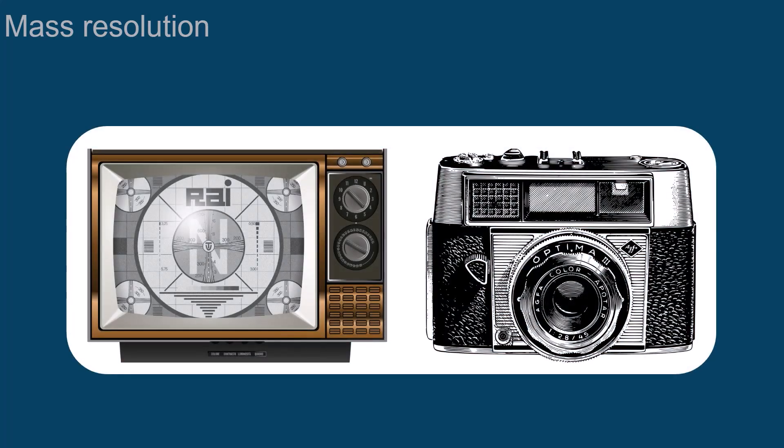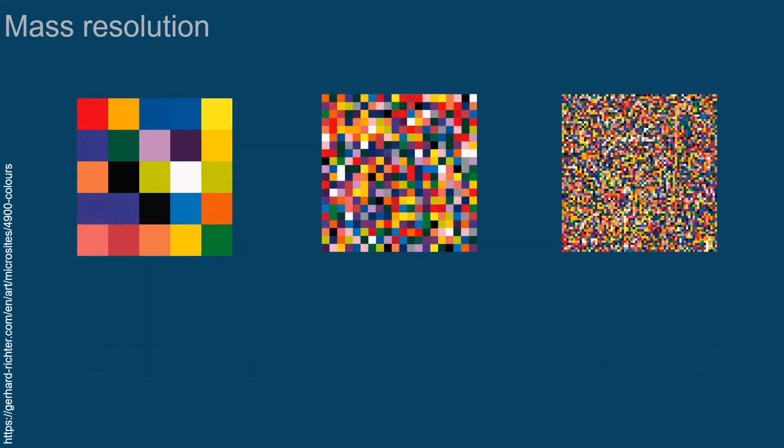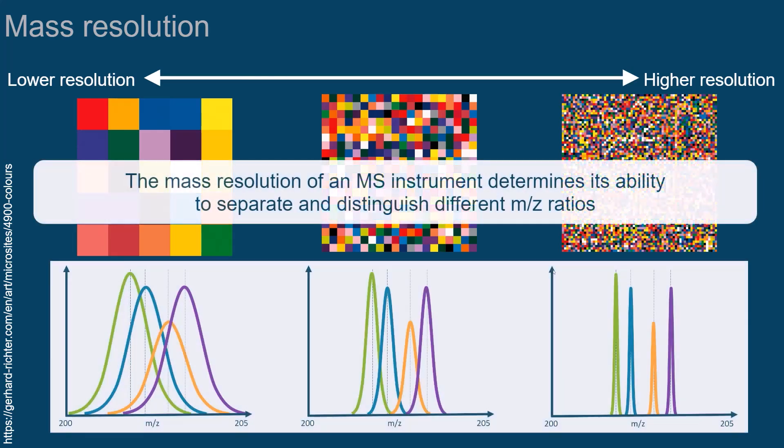You may be familiar with the term resolution from your television or camera, where it describes the amount of detail an image can contain. In this visual example of resolution, the artist Gerhard Richter has succeeded in fitting an increasing number of colored squares into an equally large area. That is, to achieve a higher resolution. The mass resolution of a mass spectrometer determines its ability to separate and distinguish different M over Z ratios.